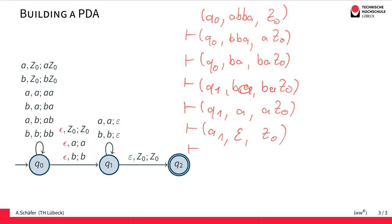And then we take the final transition here to our accepting state. So we end up in Q2. All the input is consumed and Z0 is on the stack.